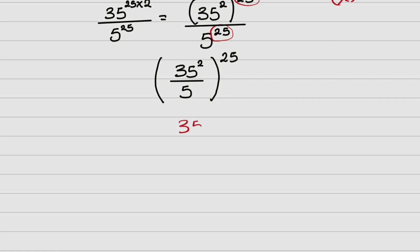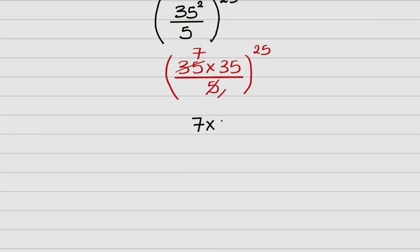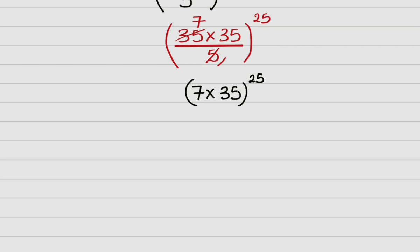Now I compute 35 times 35 over 5. The 5 divides into 35, giving 7, so I'm left with 7 times 35. And 7 times 35 equals 245. So the whole expression simplifies to 245 raised to power 25. I've succeeded in simplifying the entire problem to just this.